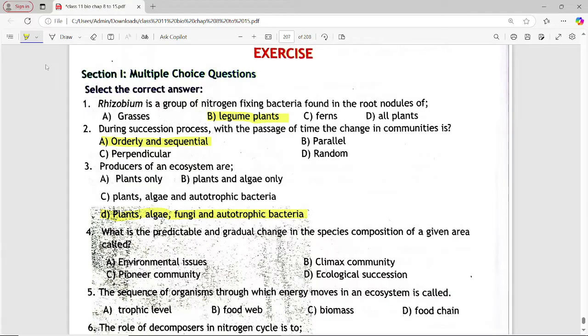Next is, what is the predictable and gradual change in species composition of a given area called? Options are environmental issue, climax community, pioneer community, ecological succession. Answer is option d, ecological succession.